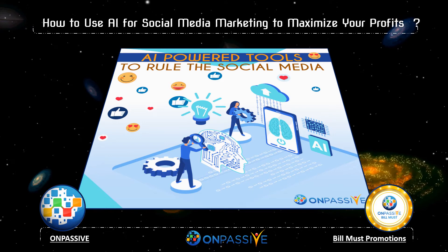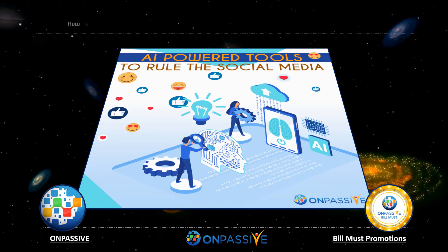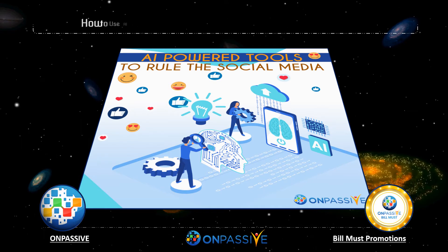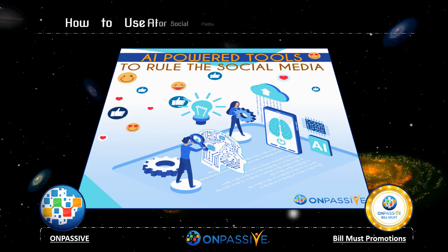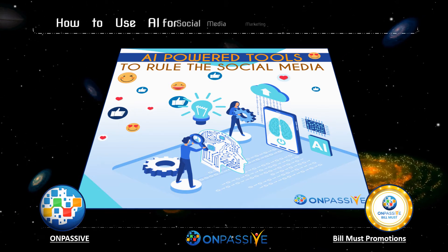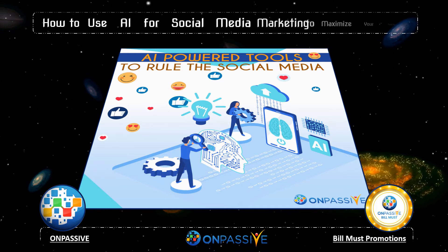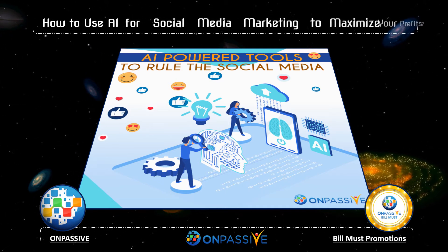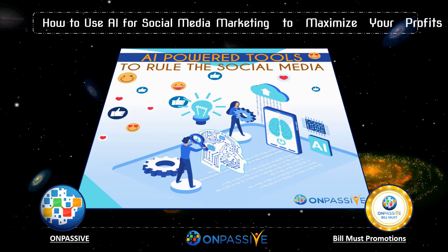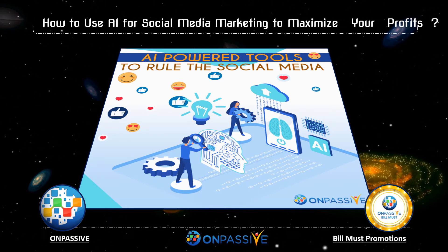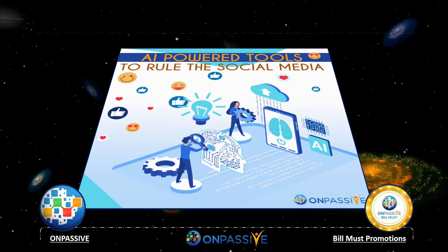Create social media posts faster: AI for social media uses historical data to learn which posts work best and what to post next on a particular social media platform. It also helps you produce social posts on a massive scale. Managing social and saving time: AI can evaluate your audience and help you achieve your work across different social channels.